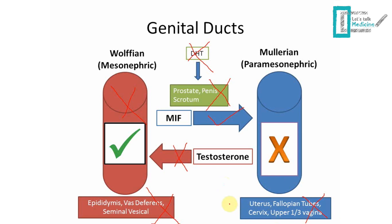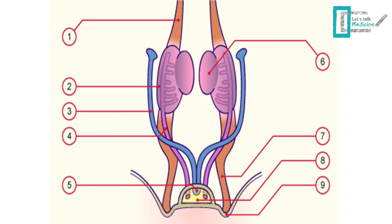In the abdomen you may find testes, and her chromosomes are XY. The key point is that testosterone function is not working — whether from the receptors, from the Leydig cells, or otherwise.